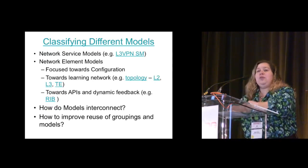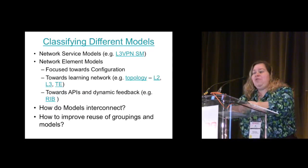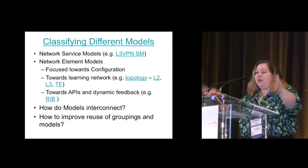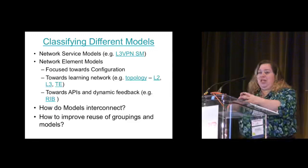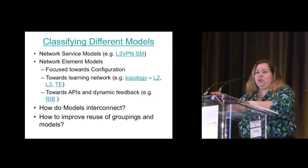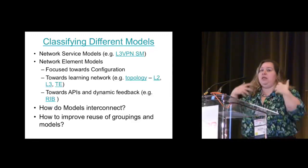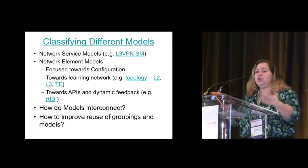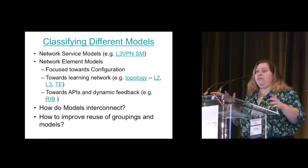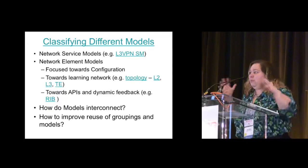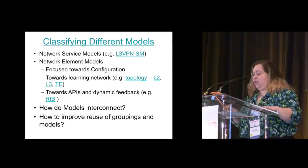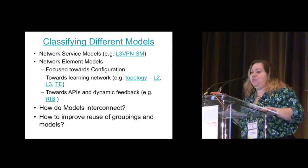How do these all interconnect? How do we make sure that if you have model A developed by one group and model B over there, and they both happen to need the same set of three parameters, you can end up with common groupings instead of slight differences? That's one of the reasons we need people coming in looking at the models from a 'how am I going to use this, how's it going to look on my routers' perspective.